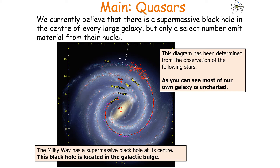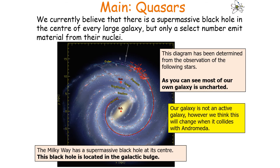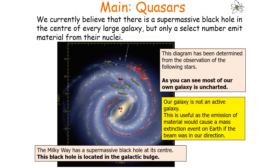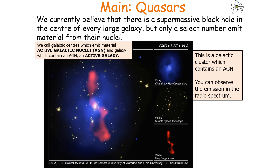Most of our own galaxy is uncharted. We think our galaxy is not currently an active galaxy, however we think this will change when it collides with the Andromeda galaxy. This would not be favourable as the emission of material could cause a mass extinction event on Earth if the beam were in our direction. Certain galaxies have an active galactic nucleus — as shown in the following picture — where there is little emission in the visible but a lot of emission in the radio, indicating many radio waves being emitted from the centre of the galaxy.